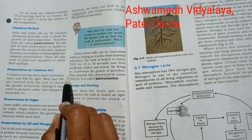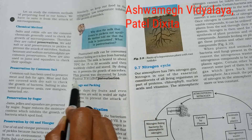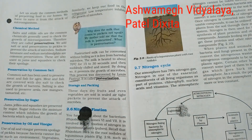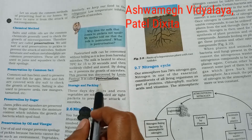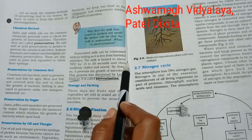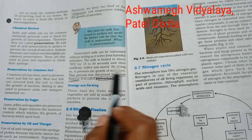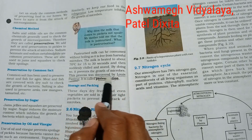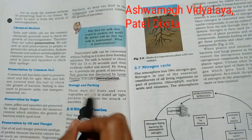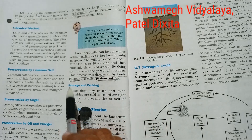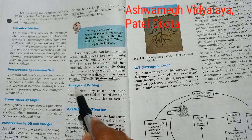This process was discovered by Louis Pasteur, which is why this process is called pasteurization. This can be asked as a short question or as a definition: 'What is pasteurization?' You will need to write the complete method — milk heated to about 70°C for 15 to 30 seconds, suddenly chilled and stored, preventing microbial growth.